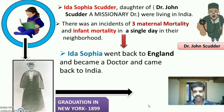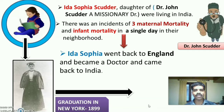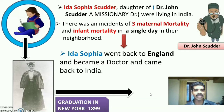Ida Sophia Scudder was a young woman who lived with her father, Dr. John Scudder, a missionary gynecologist in India. Though he was a missionary gynecology doctor, the orthodox religious community did not allow him to conduct deliveries. There was an incident of three maternal and infant mortalities in a single day in their neighborhood, which changed the mind of Ida Sophia Scudder.